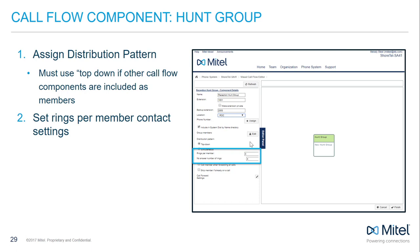Rings per member sets the number of times the hunt group rings each member before moving to the next. The no-answer number of rings sets the total number of rings before sending calls to the no-answer condition. When using top-down distribution, it is important that the no-answer number of rings be higher than the total rings for all individual members combined. For example, if rings per member is 3 and no-answer is 4, the first person receives 3 rings, the second receives 1, and the call forwards to the no-answer destination.